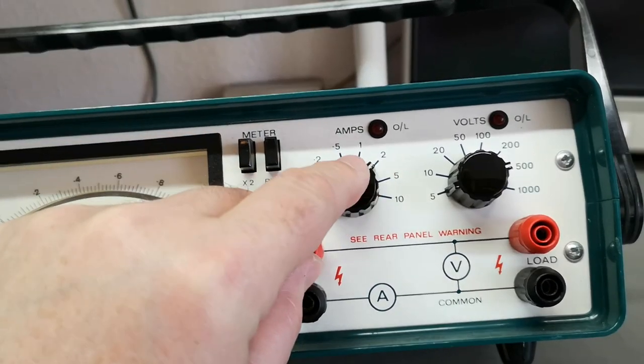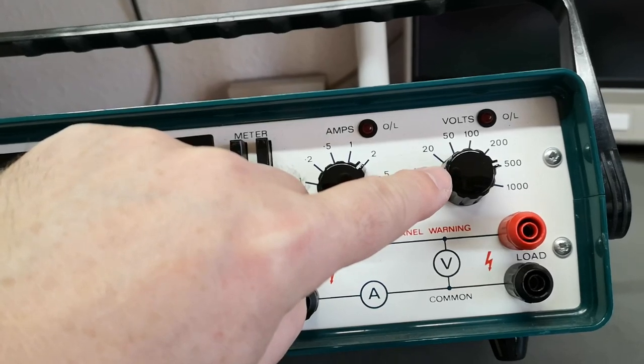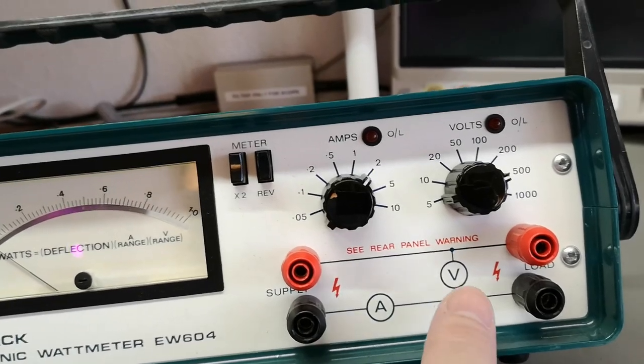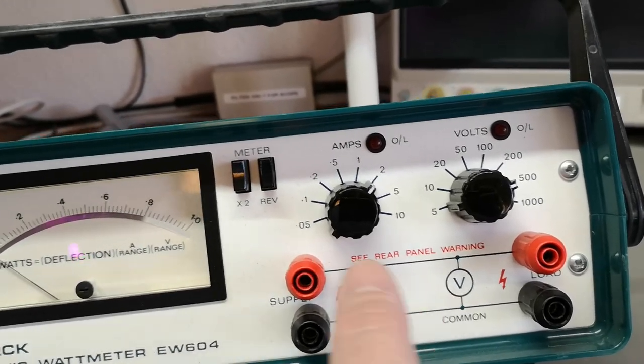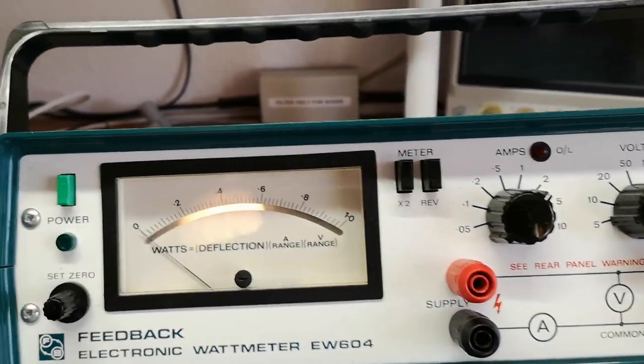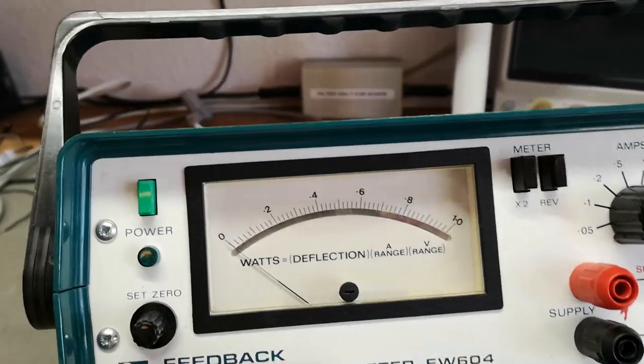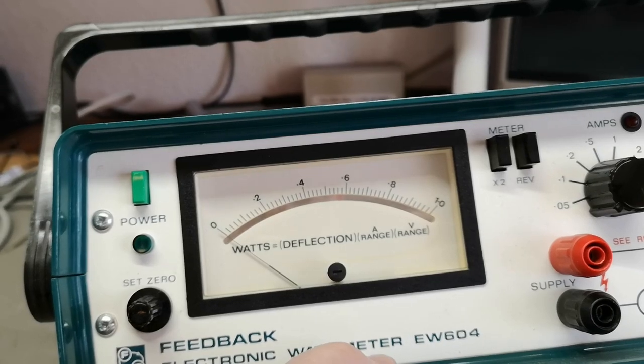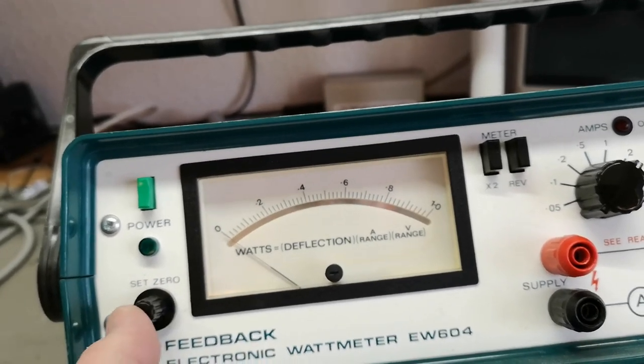You of course set your amps and your volts, and then it will multiply voltage with amps and then display watts. That is how it works, super smart.